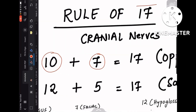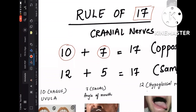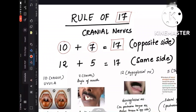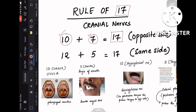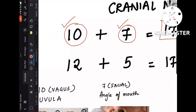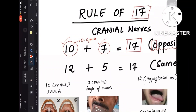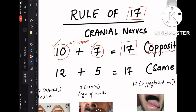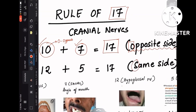Here is the mnemonic: the Rule of 17. The 10th nerve plus the 7th nerve adds up to 17. The lesion of the 10th nerve and 7th nerve causes deviation to the opposite side. Remember: 10 has a zero — 'O' for opposite side. So 10 plus 7 equals 17, and the deviation is to the opposite side.